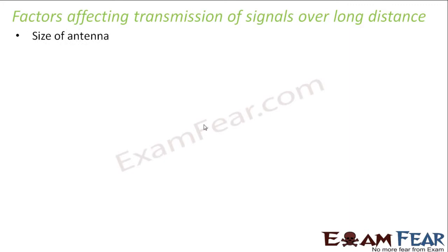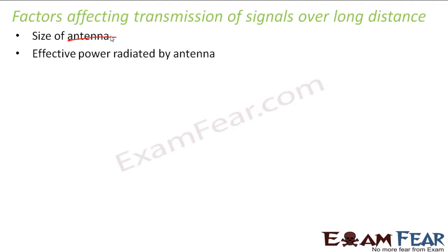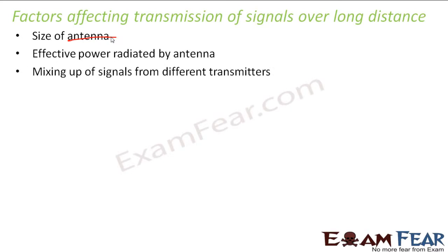The first factor is the size of antenna. Here you get a new term — antenna — which we have not talked about before, but antenna is something all of you are aware of. You would have had a dish antenna for your television, or seen an antenna in your car for the radio. The second factor is the effective power radiated by the antenna. The third factor is mixing up of signals from different transmitters. These are three important factors which affect the transmission of signals over long distances.